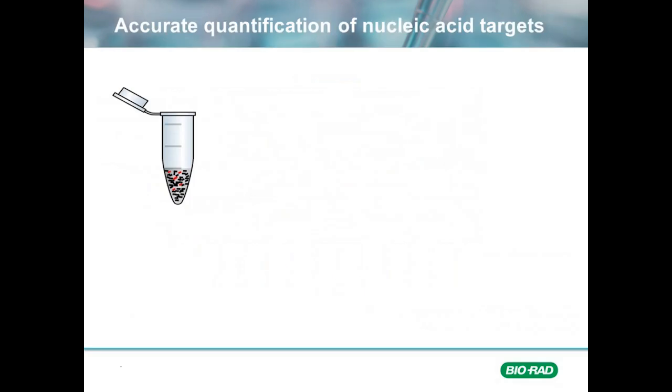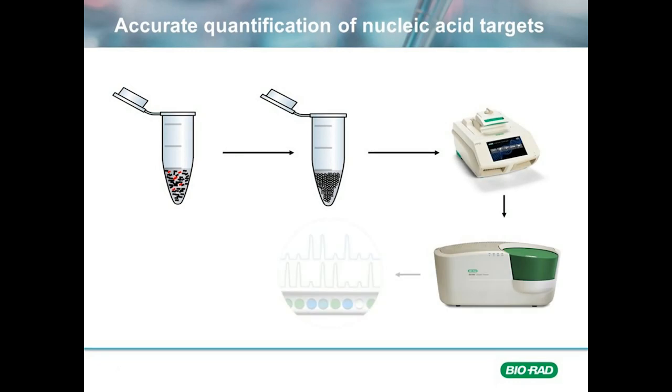On the chemistry side of things, ddPCR involves taking what would be a typical 20 microliter qPCR reaction and breaking it up into tens of thousands of sub-reactions in a process called partitioning. These sub-reactions are then amplified in a thermal cycler and subsequently analyzed for the presence or absence of the target of interest.